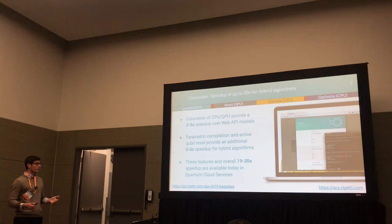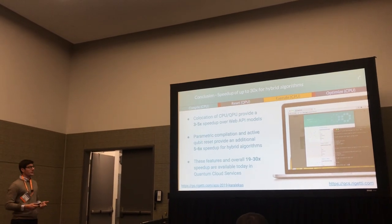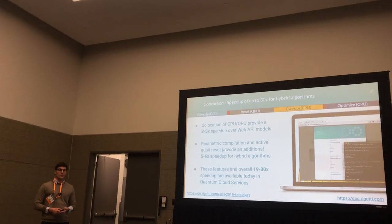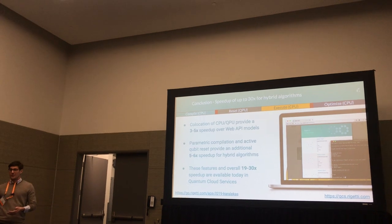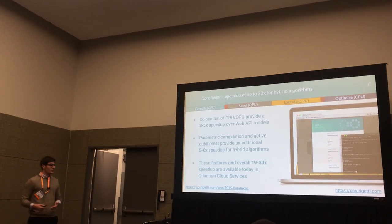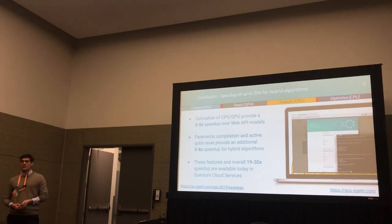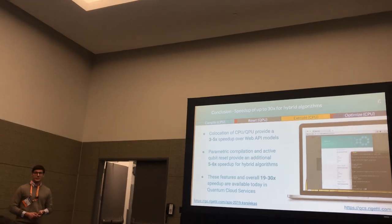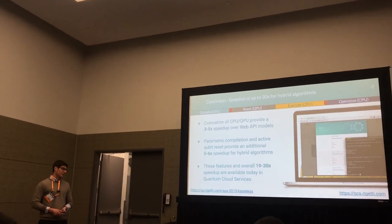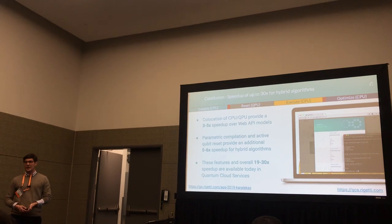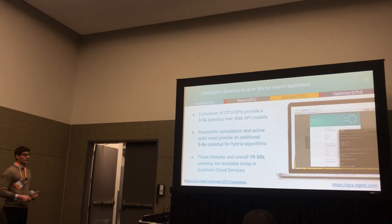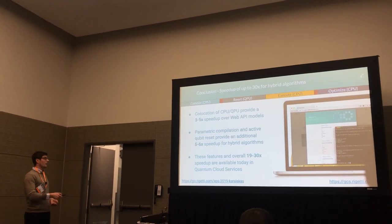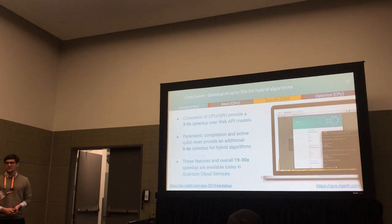In conclusion, just by co-locating our classical and quantum resources, we already get a 3 to 5x speedup over web API models of quantum computing. If we then enable parametric compilation and active qubit reset, we get an additional 5 to 6x speedup when running these variational hybrid algorithms. These three features and the overall 19 to 30x speedup are available today in Quantum Cloud Services, which is currently in public beta. You can sign up at the link shown, and all of the data and data analysis from this talk are available on GitHub at the short link here. Thank you very much.